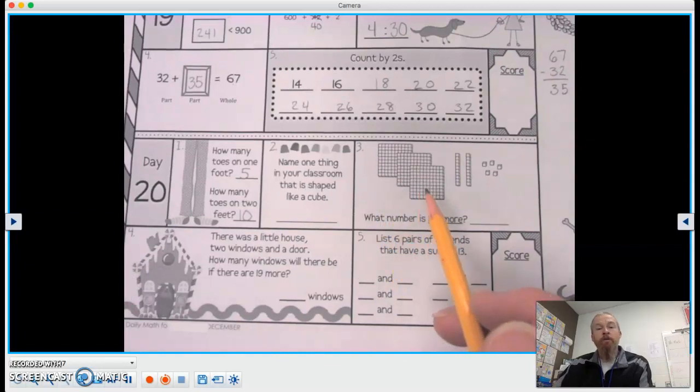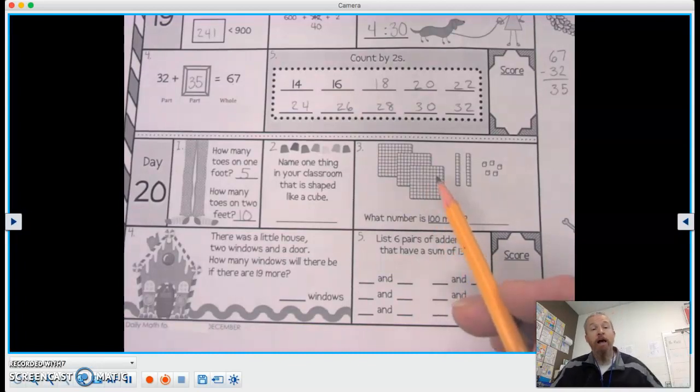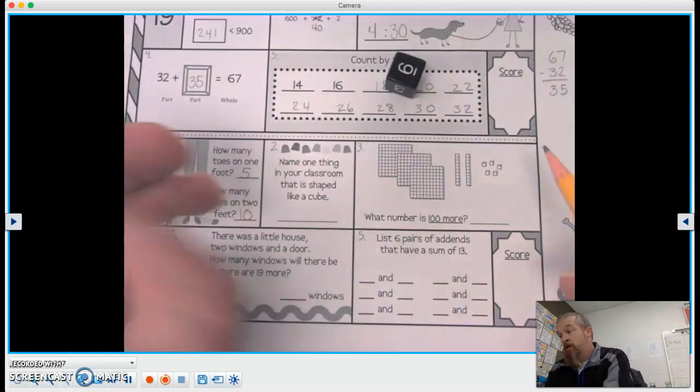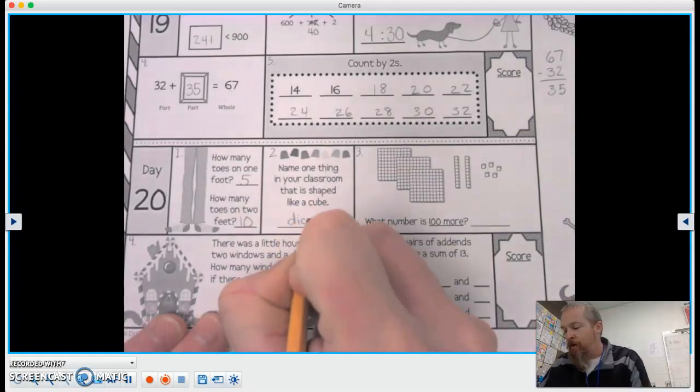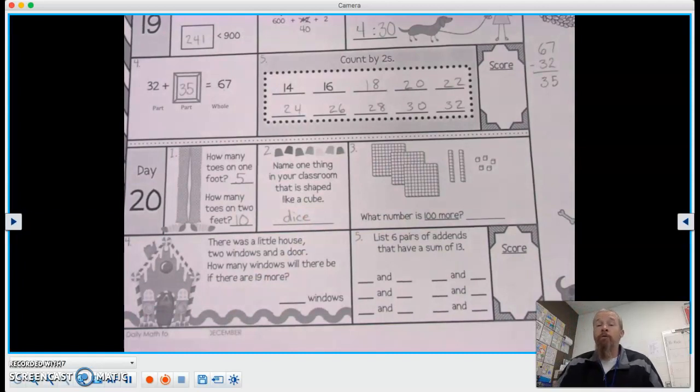Name one thing in your classroom that is shaped like a cube. I'm seeing this right here. This looks like a cube to me. Boom. See that? Dice. Dice is always a great cube. You may see other things as well. Some of our Kleenex or tissue boxes are kind of shaped like a cube. Like a six-sided, you know. There might be some other things in there as well. Maybe if you have like a more of a square-shaped pencil bin, that could be kind of cube-shaped. But here we go. Let's keep going.